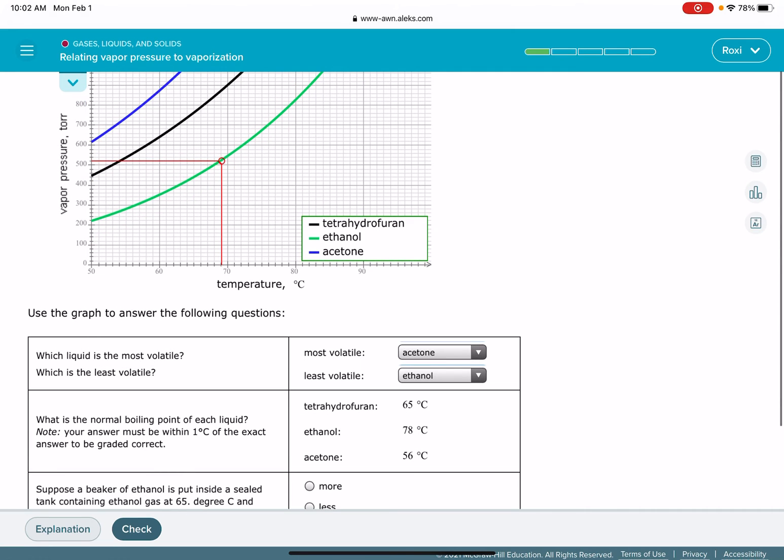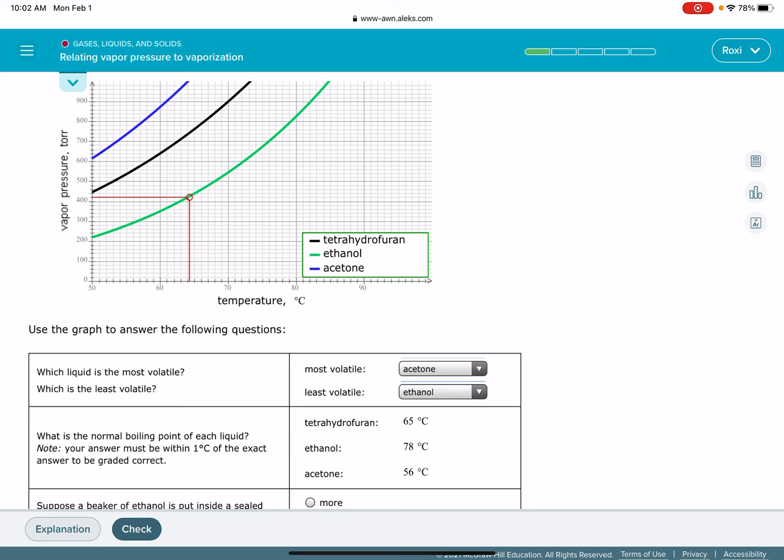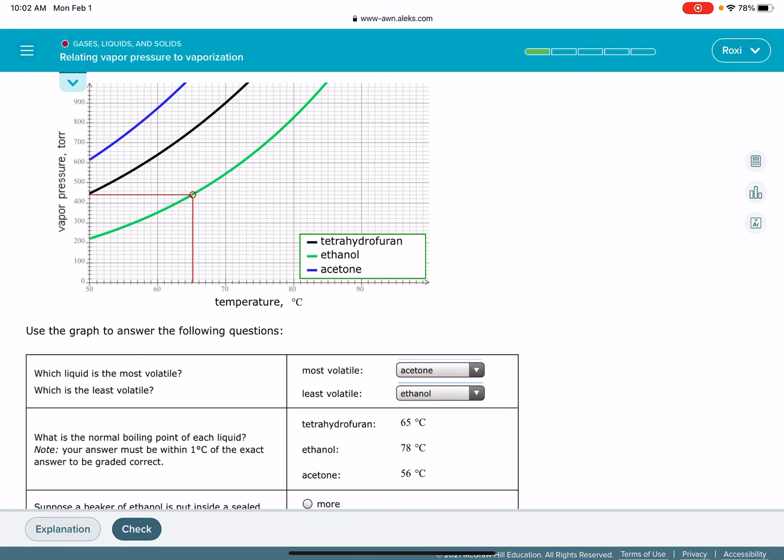And it says that the ethanol is at 65 degrees C. So I want to find the 65 degree part on the graph. We're going to focus on that temperature.